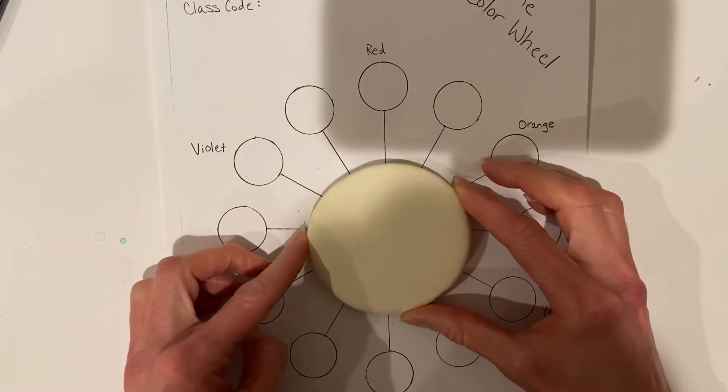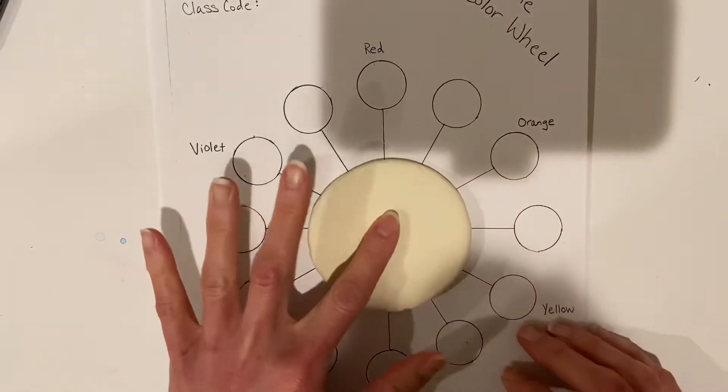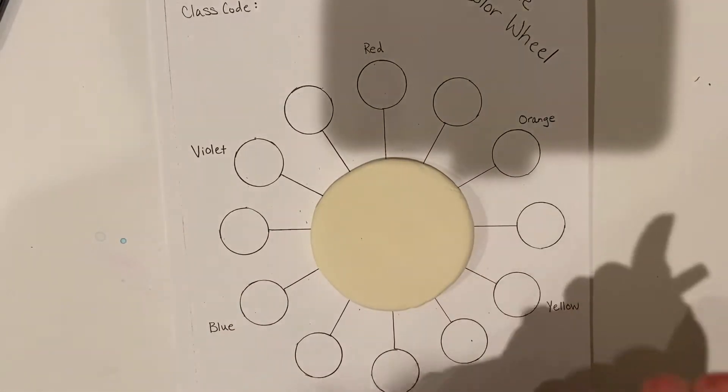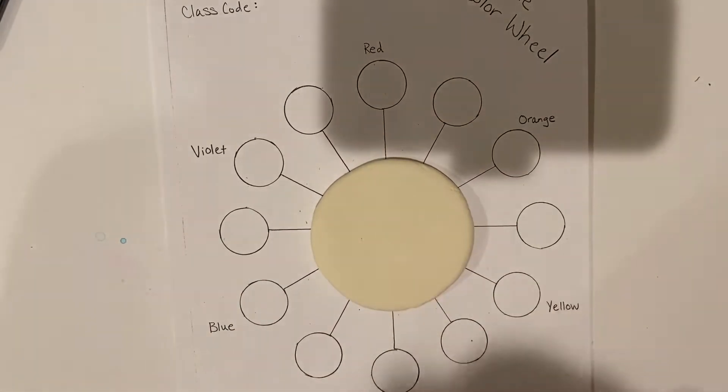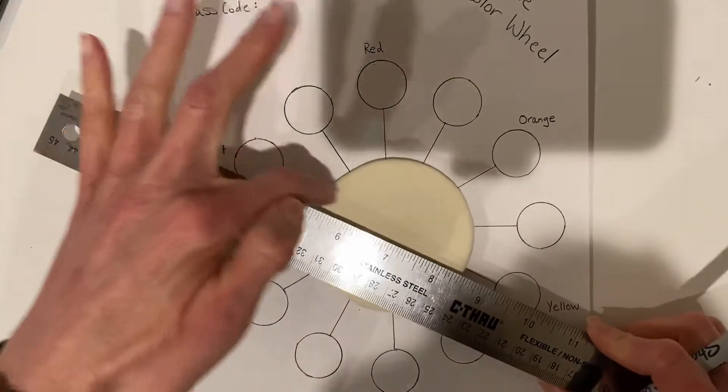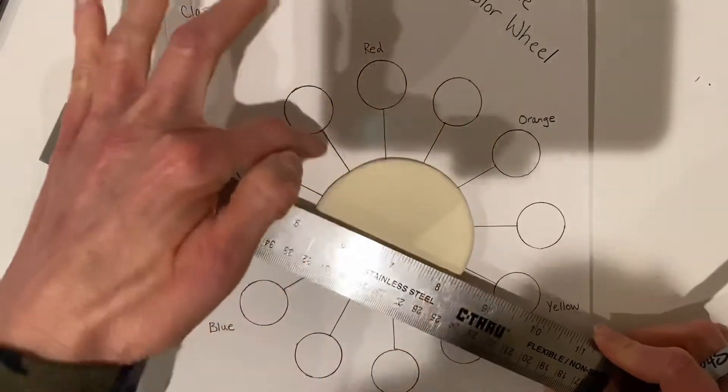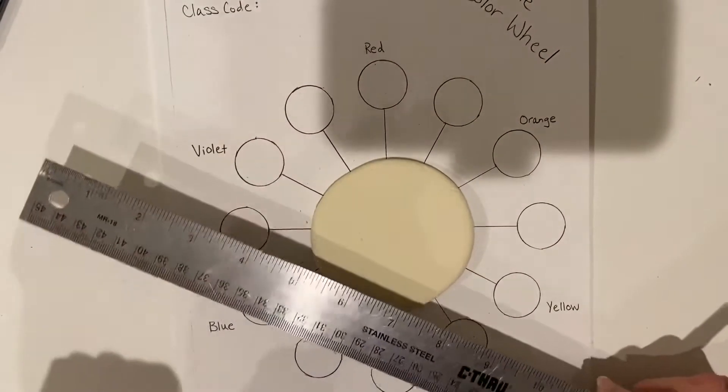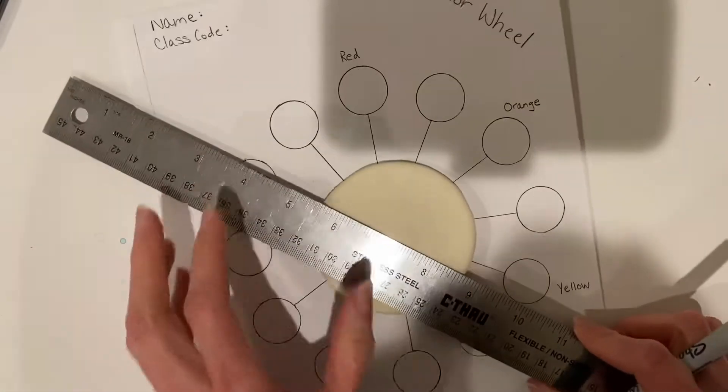Then you're going to take a skinny Sharpie and a ruler, and you're going to start drawing your lines. You're going to match up where each line goes straight through your color wheel. Use what you see on the worksheet and just draw your lines that way.